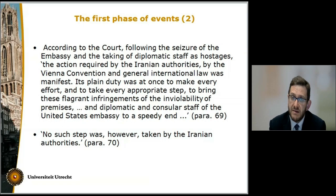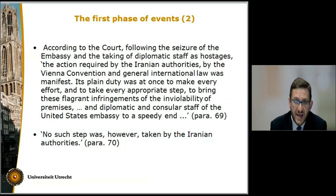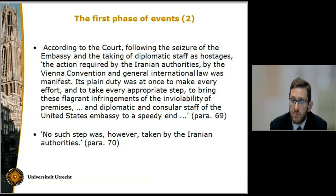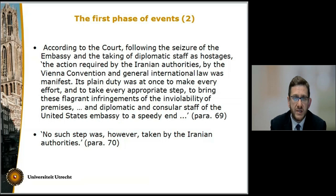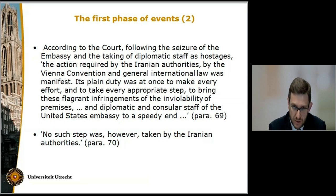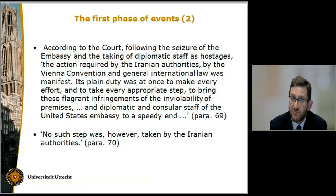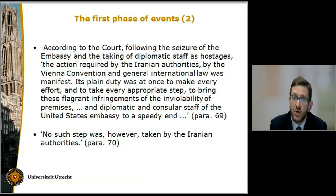At the same time, the court stated that the seizure of the embassy immediately created a number of duties upon Iran, amongst which the obligation to make every effort, to take every appropriate step, to bring the occupation of the embassy to an end and to free the hostages. These were obligations that bound Iran under international law, both conventional — that is, conventional diplomatic relations — and customary. But the Iranian authorities did nothing of the sort. So essentially, the court held that the omission on behalf of the Iranian authorities to take all the measures necessary under international law was an omission attributable to Iran. Iran was responsible for the omission of its own organs, but it was not responsible for the actual seizure of the embassy and the taking of the hostages.